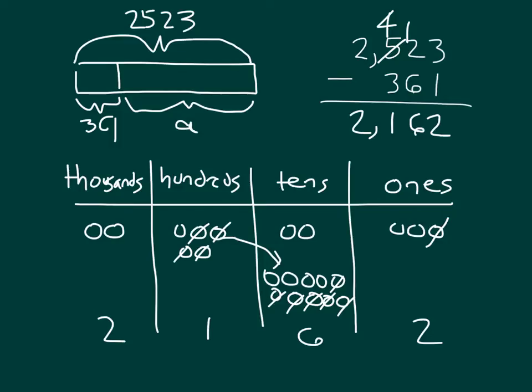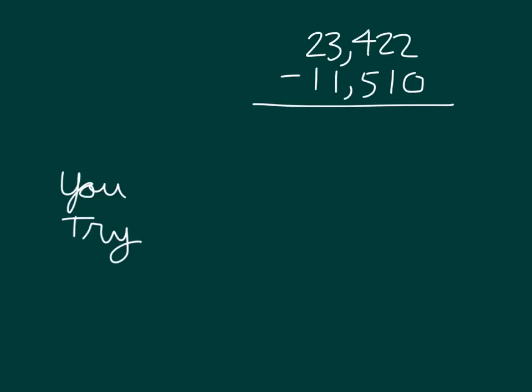To make sure that they've done that work correctly. So as you see again, we regrouped, and as we're subtracting the three hundred sixty-one, the one one, the six tens, and the three hundreds, that's how it is that we approach this problem. Okay, it's your turn to try.